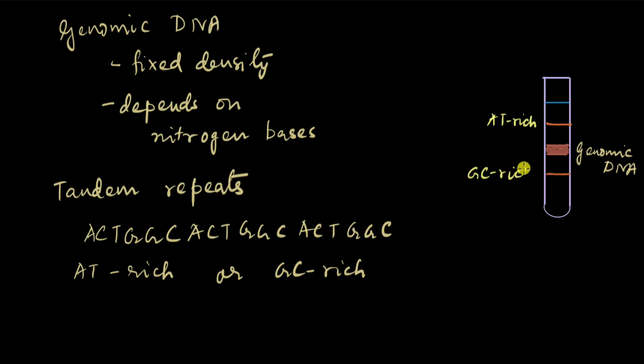Satellite DNA can be of different types based on the length of the sequence that is being repeated over and over again. The two major types of satellite DNA that we see very often are mini satellites and micro satellites.